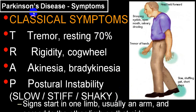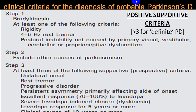In Parkinson's disease you get tremors, drooping eyelid, salivary drooling, head tilted forward, and a slow shuffling gait with short steps. Diagnostic criteria: Step 1 is bradykinesia; Step 2 is exclusion of other causes of Parkinsonism. In Step 2, bradykinesia, resting tremors, hypertonia, and postural instability are the four classical features.